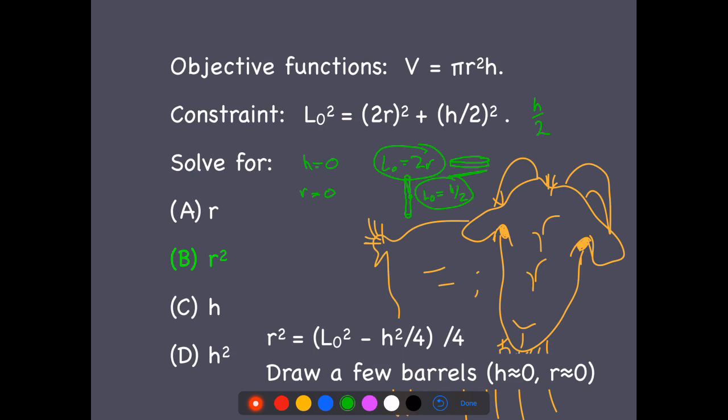And so that means that h has to be less than 2L₀. So there's one constraint on my domain. And then L₀ has to also be... Or sorry, r.